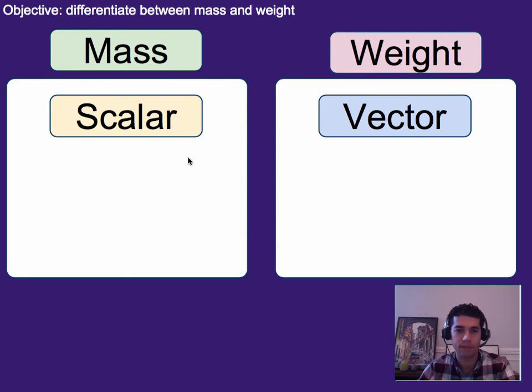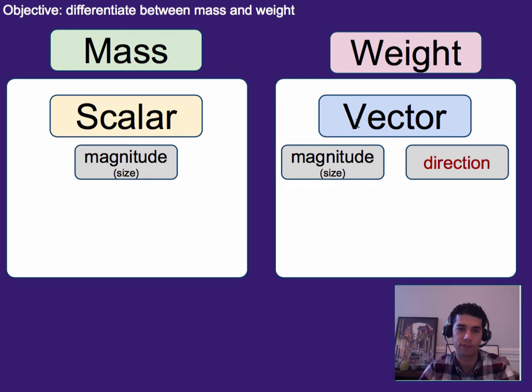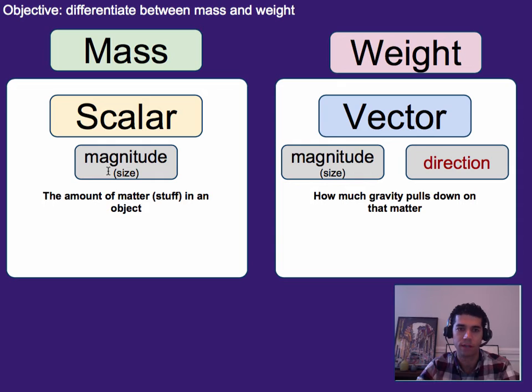So, to recap and a little bit of a comparison between mass and weight. Mass is a scalar. It doesn't have a direction. It's just the amount of stuff. There's no direction to that. Versus weight is a vector. It has a direction and is a force. That means mass has a magnitude. Versus weight has magnitude plus direction. Again, remember that mass is the amount of matter or stuff in an object. And weight would be how much gravity pulls down on that object.